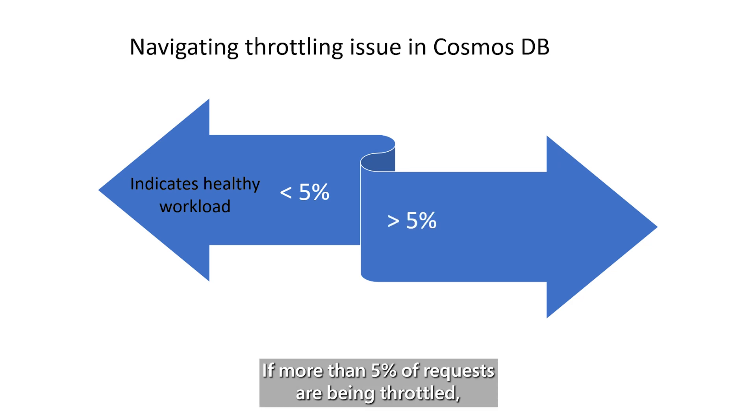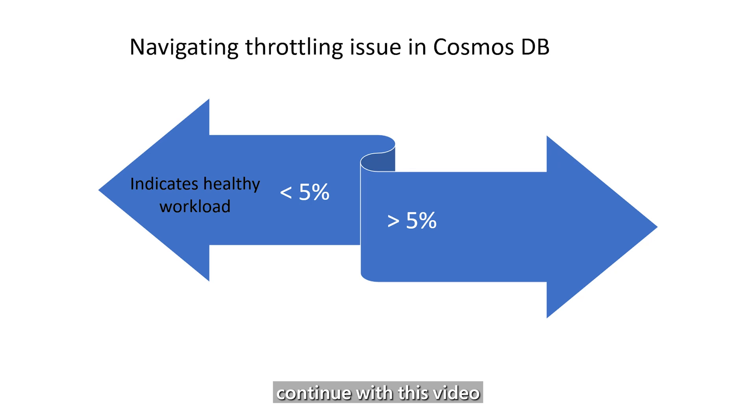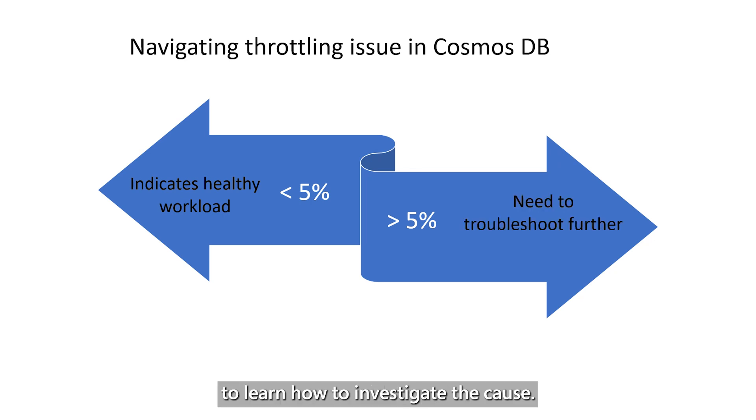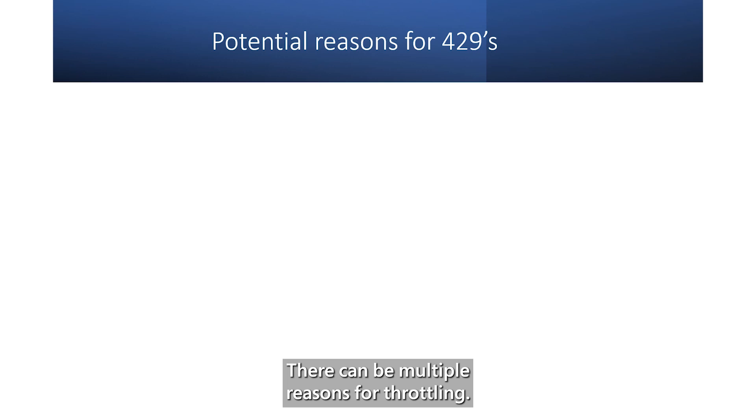If more than 5% of requests are being throttled, continue with this video to learn how to investigate the cause. There can be multiple reasons for throttling.